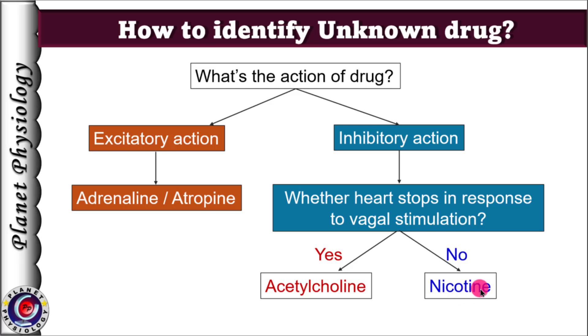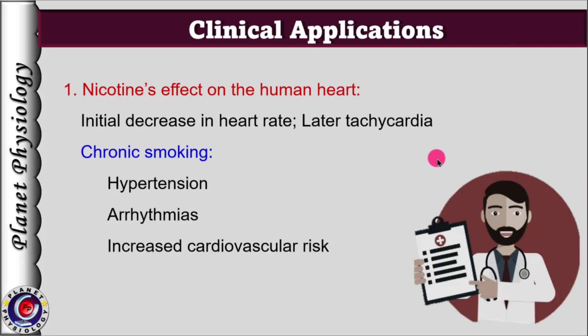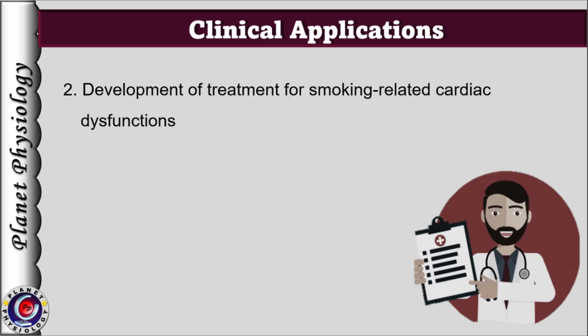Before winding up, let's study some clinical applications, particularly in understanding cardiovascular physiology, pharmacology and toxicology related to nicotine. This experiment provides valuable insights into nicotine's effect on the human heart. Nicotine initially slows the heart but later causes tachycardia, a mechanism seen in chronic smokers and nicotine users. Chronic nicotine exposure contributes to hypertension, arrhythmias and increased cardiovascular risk. Understanding vagal control and smoking-related disorders helps in developing treatments for smoking-related cardiac dysfunctions.